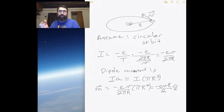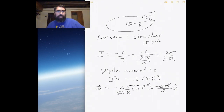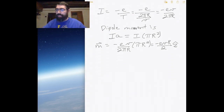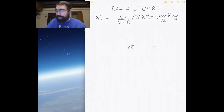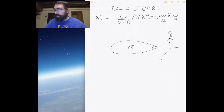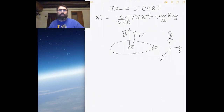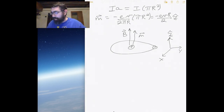We're going to call this the z-direction. We can orient the atom any way we want, so for simplicity let's have it oriented in the z-direction. Similarly, let's have the magnetic field pointing in the z-direction. Redrawing the picture with z pointing up, the magnetic moment points up and the magnetic field also points in the upward direction. The forces acting on the electron are the centripetal force and the magnetic force.